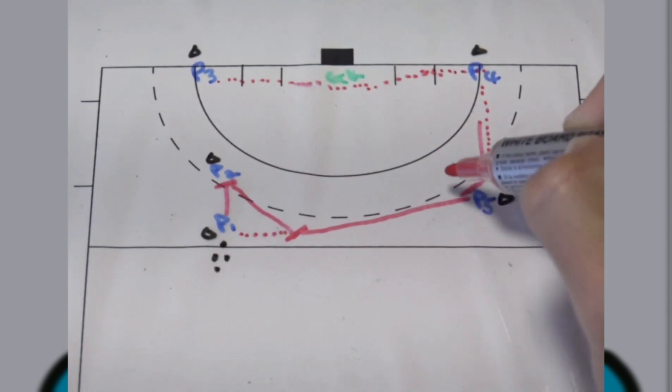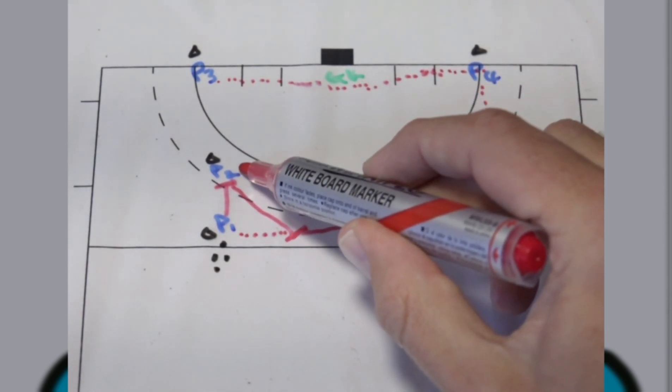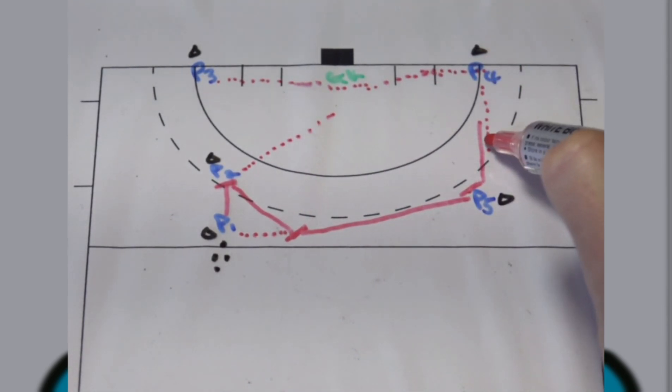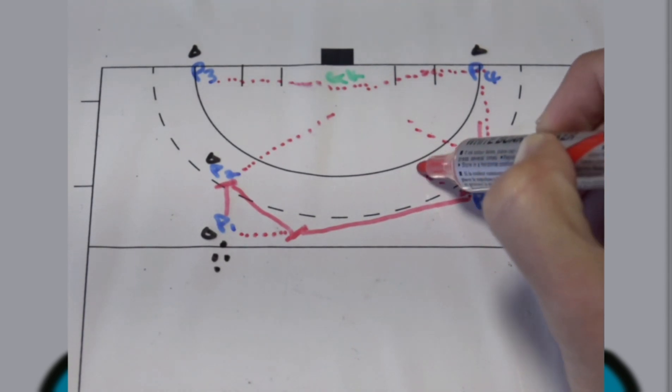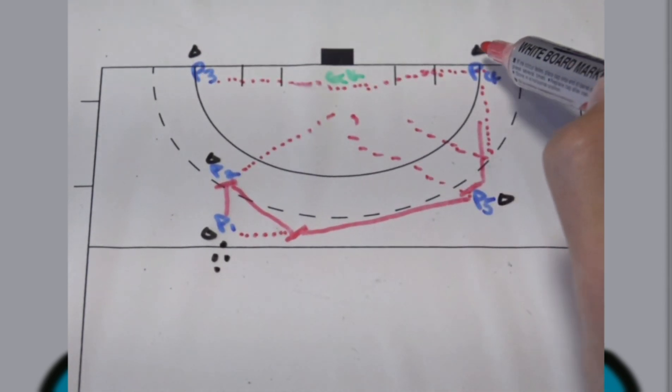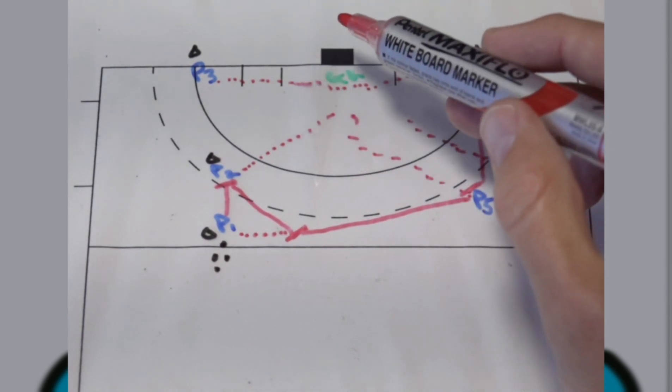While all of these passes have been made, player two after their pass will go back into the circle. Player four when they're done over here will also make their way into the circle. Player five also makes their way into the circle for options of player three to find them and try and score a goal.